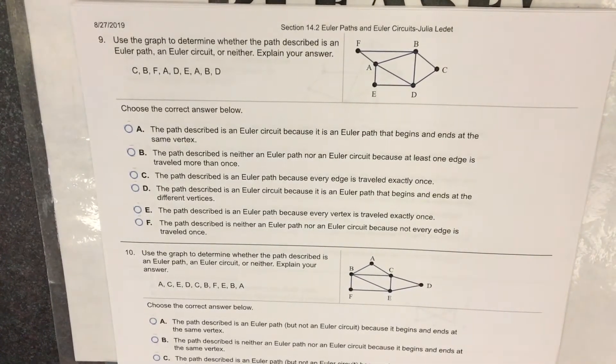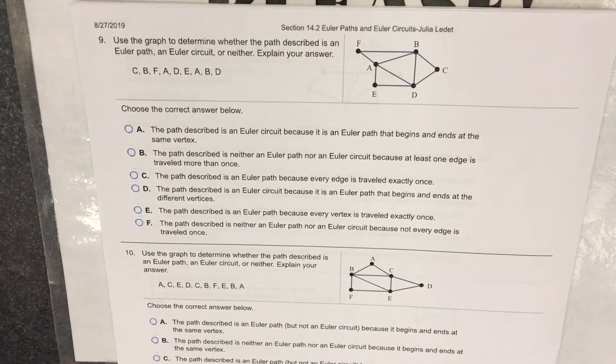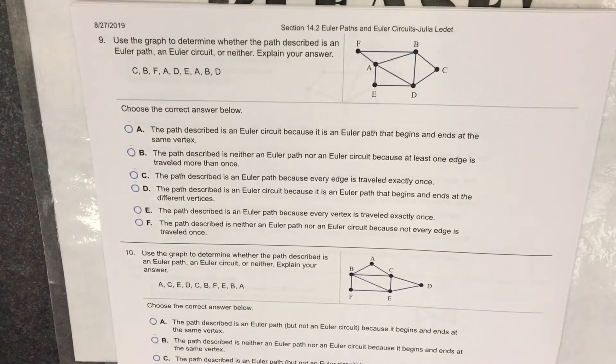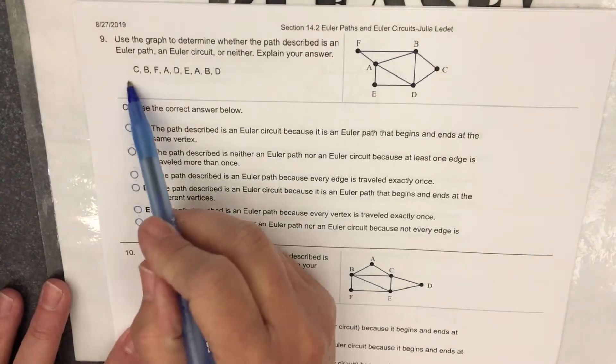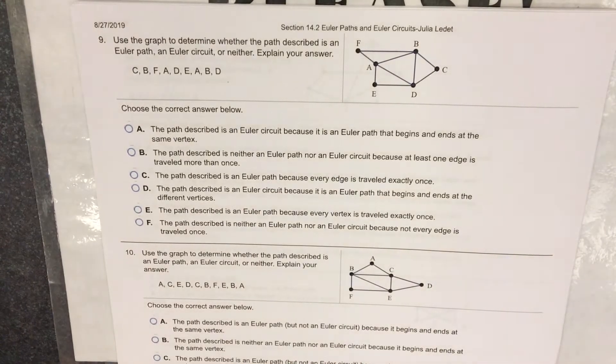Problem number 9 is not a question about whether or not this graph has an Euler path or an Euler circuit. It is a question about whether or not this string of letters gives an Euler path or an Euler circuit.